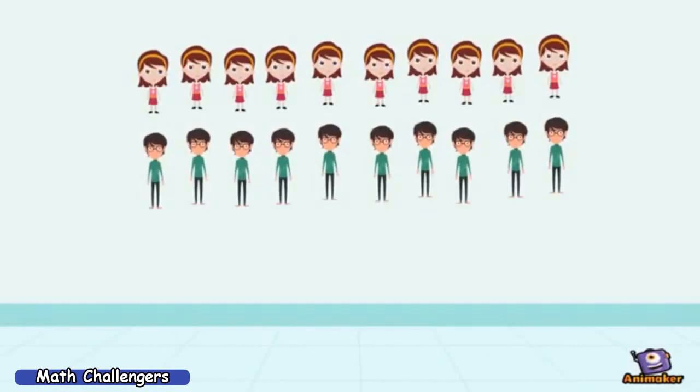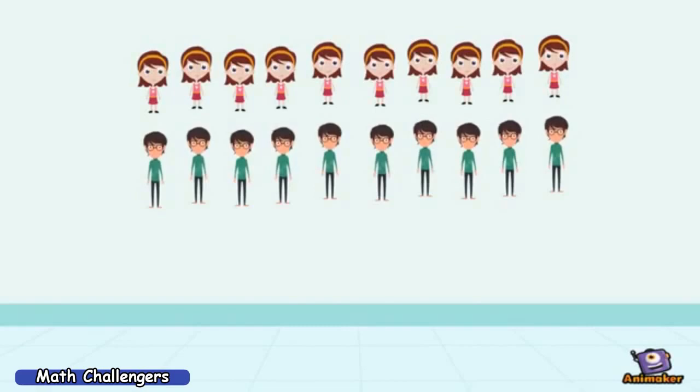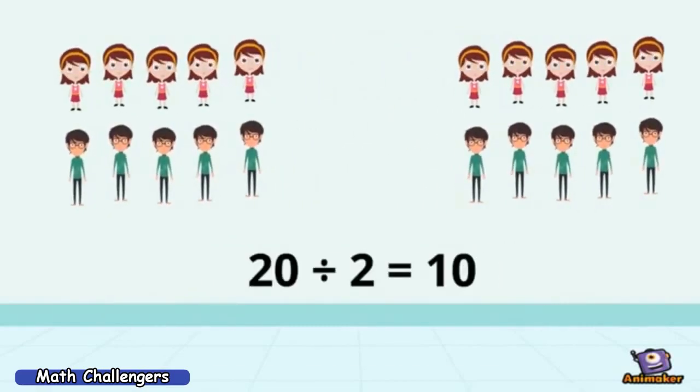When the students were divided into two groups, let's say group A and group B, how many students were in each group? Is there anyone not included in group A and group B? Since after dividing 20 by 2, the answer is 10, and there is no remainder. Therefore, we can say that 20 is divisible by 2.